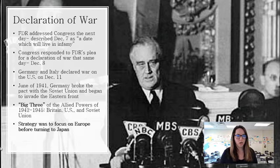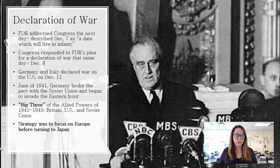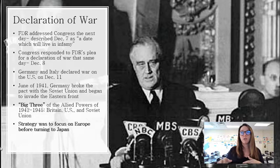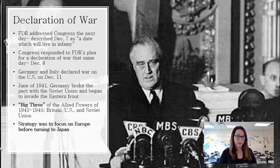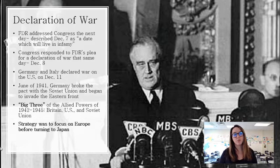FDR addressed Congress the next day, asked for a declaration of war on Japan, and Congress did so. Germany and Italy then declared war on the United States. Earlier, in June 1941, Germany had already broken the non-aggression pact by attacking the Soviet Union — stabbing Stalin in the back — which allowed the United States and Britain to unite with the Soviet Union against their common enemy of Germany, despite ideological differences. The strategy would be Europe first, which we'll discuss later.